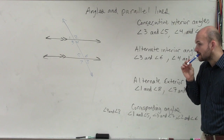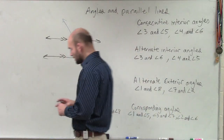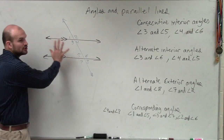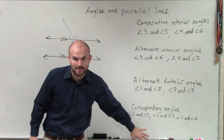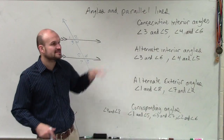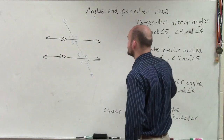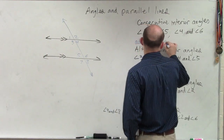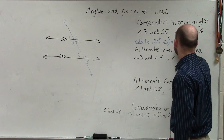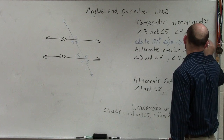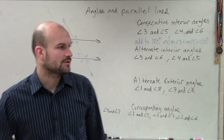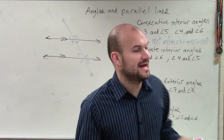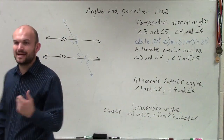What I want you guys to understand is, when we have parallel lines, our relationship between our angles is special. It could be straight, it could be perpendicular. When you have consecutive interior angles with parallel lines — this only occurs when you have parallel lines — consecutive interior angles add up to 180. Example: measure of angle three plus the measure of angle five equals 180 degrees.